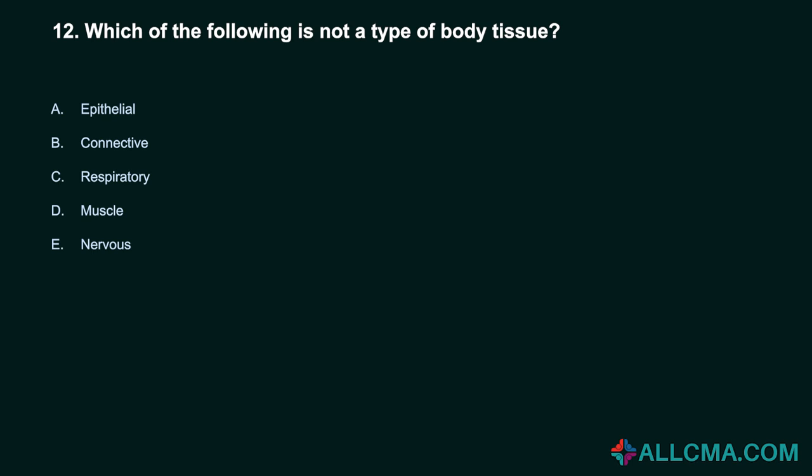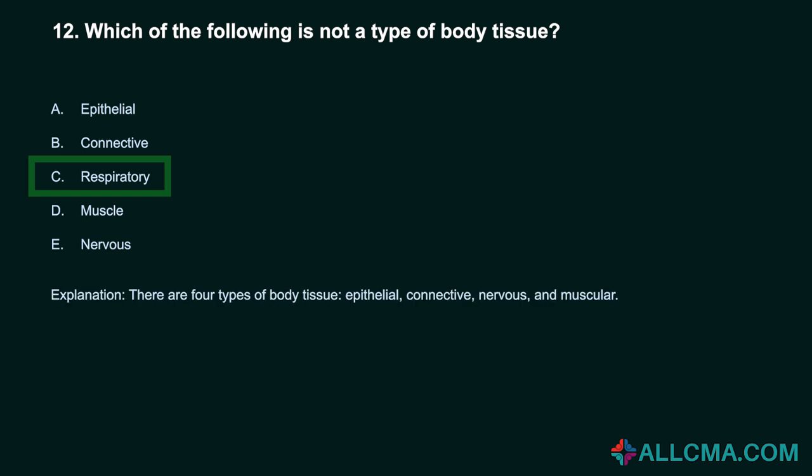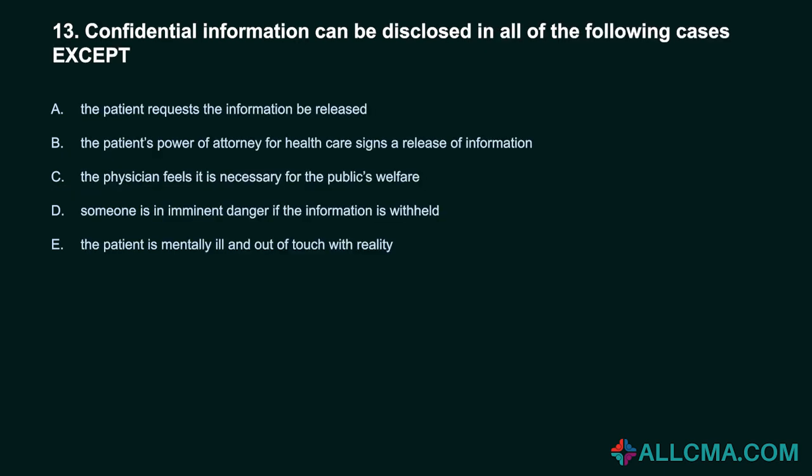Question 12: Which of the following is not a type of body tissue? a) epithelial, b) connective, c) respiratory, d) muscle, e) nervous. Correct answer: C, respiratory. There are four types of body tissue: epithelial, connective, nervous, and muscular.